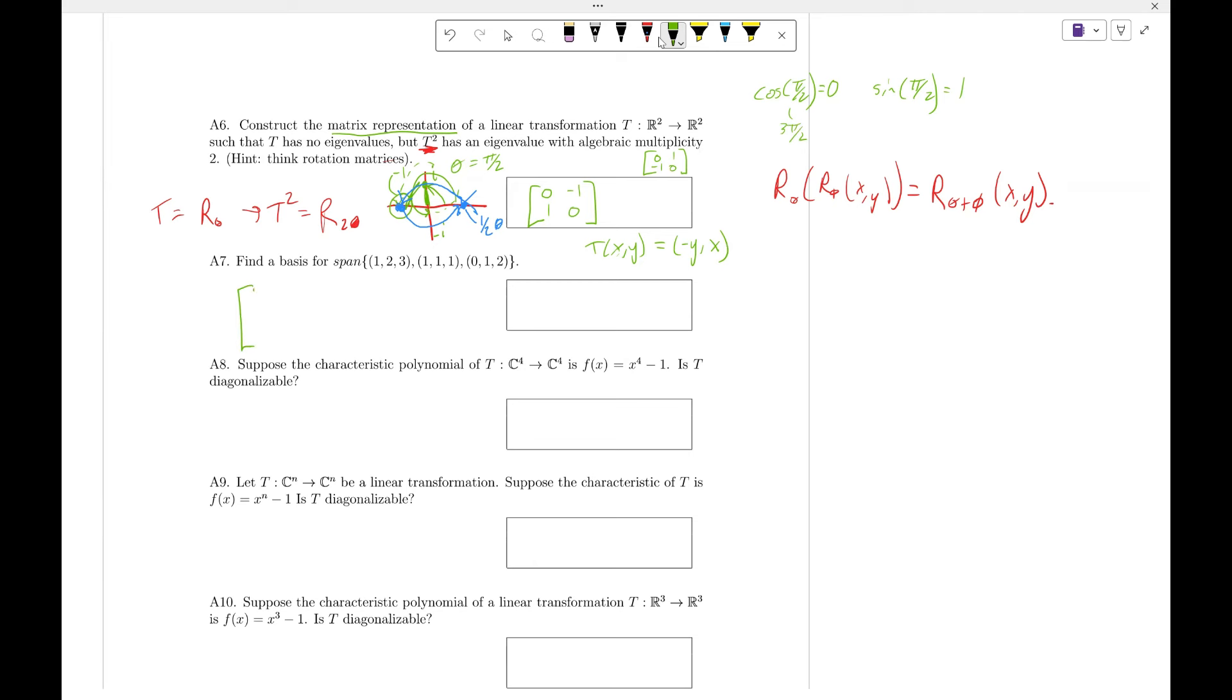So what we're going to do is set up a system of equations based on a(1,2,3) + b(1,1,1) + c(0,1,2), and it's going to give us (1,2,3), (1,1,1), (0,1,2).